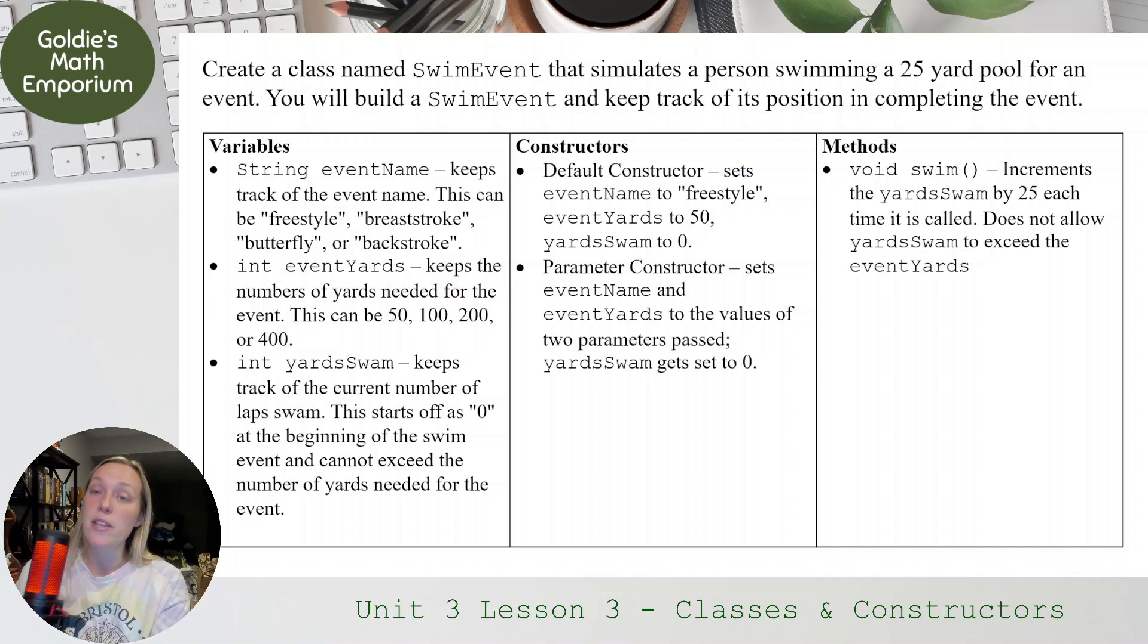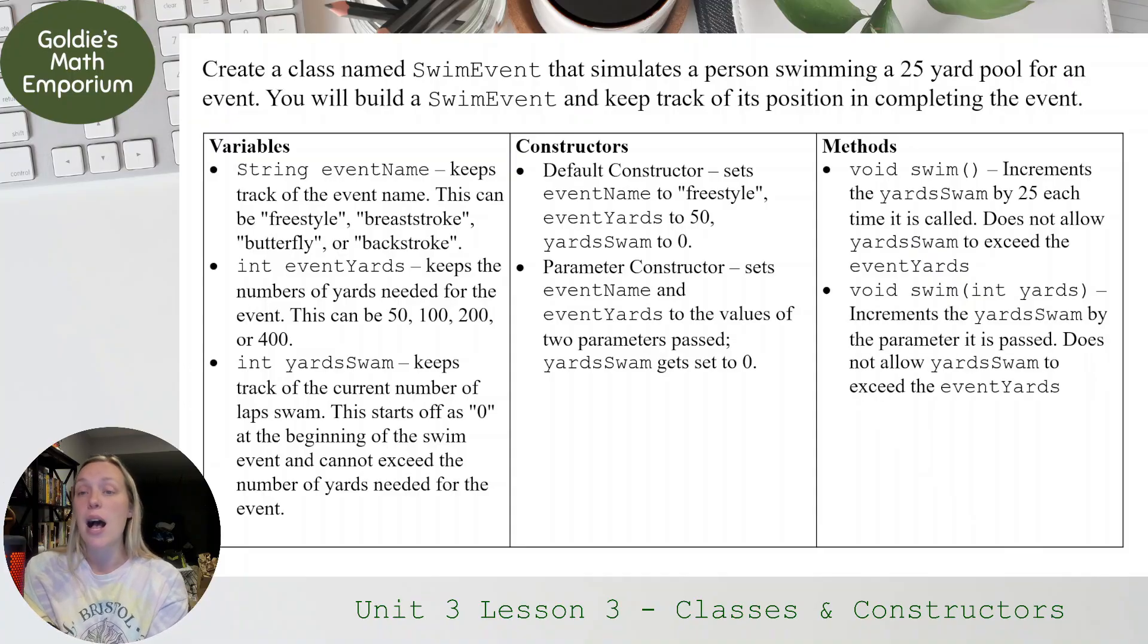There's going to be a void swim method that increments yardsSwim by 25 each time it's called, but does not allow it to exceed the eventYards. swim(int yards), so the same name with a different parameter. Remember, that's called method overloading. Method overloading, where it has the same name, different set of parameters, so it knows which one to call on based on if it has a parameter or not. So if it's passed int yards, it increments the yardsSwim by the parameter it is passed. It does not allow yardsSwim to exceed eventYards.